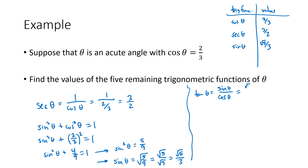Sine of theta we know is square root of five over three, and cosine of theta is two over three. Multiply top and bottom by three there, and we end up with square root of five over two. Now what are we missing? We're missing cosecant and we're missing cotangent. All of the different identities that we could use should give us the same values.